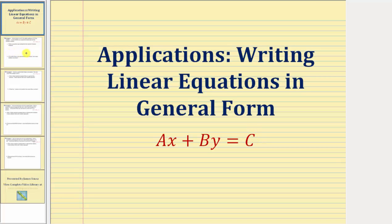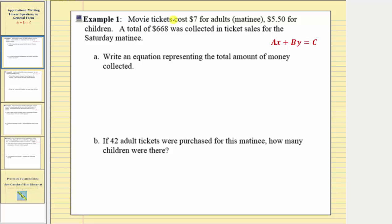Let's look at our first example. Movie tickets cost seven dollars for adults and five dollars fifty cents for children. A total of six hundred sixty-eight dollars was collected in ticket sales for the Saturday matinee. We're writing an equation representing the total amount of money collected. Notice how there are two unknowns: the number of adult tickets sold and the number of children's tickets sold.